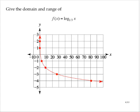Give the domain and range of f of x equals log base 1 3rd of x. Looking at the graph and remembering that there is an asymptotic feature, there's a vertical asymptote at x equals 0.